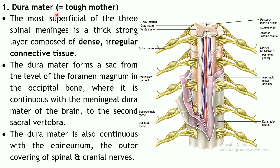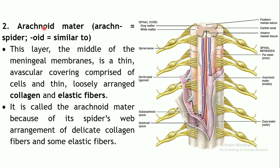The outermost layer, the dura mater, means 'tough mother.' This layer has a thick, strong structure composed of dense irregular connective tissue. It forms a sac-like structure in which the spinal cord is suspended, and it is continuous with the meningeal dura mater in the brain. It is also in continuation with the epineurium — the outermost layer of the spinal and cranial nerves.